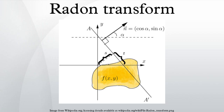Let f(x,y) be a compactly supported continuous function on R². The Radon transform is a function defined on the space of straight lines L in R² by the line integral along each such line.